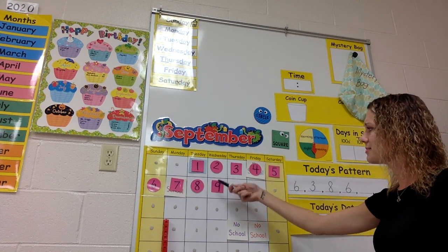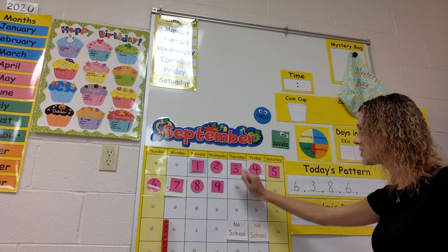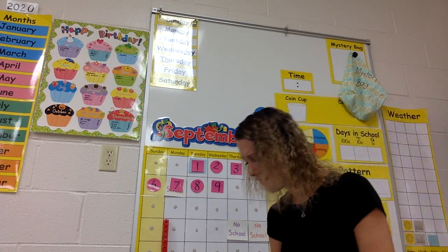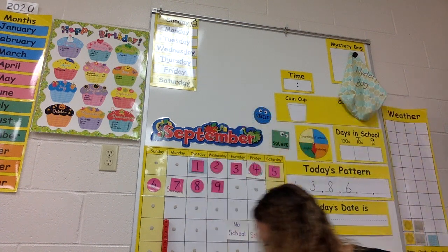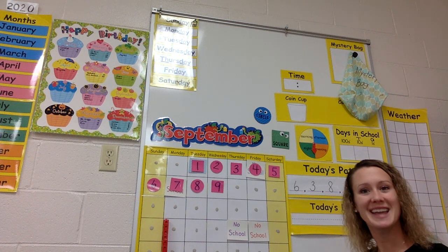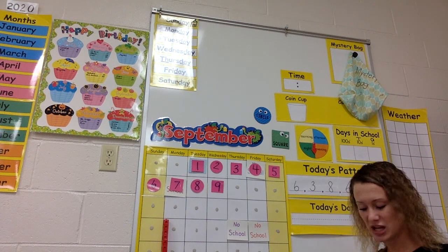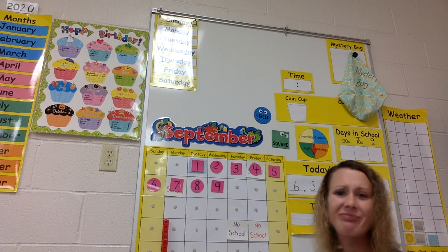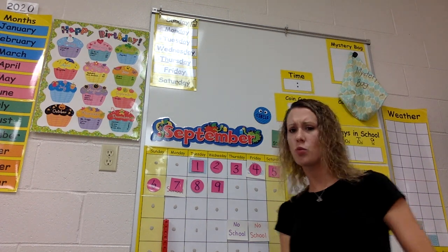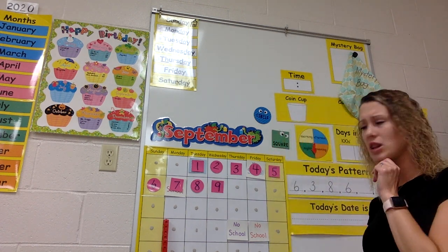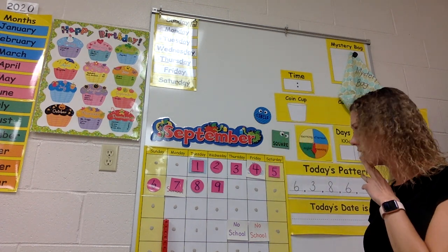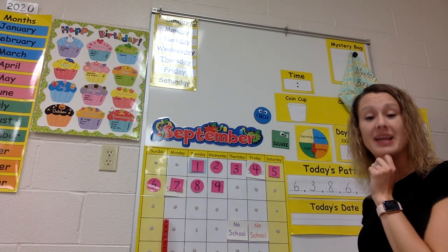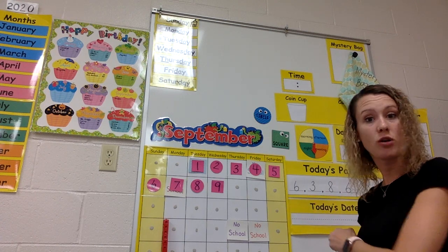If yesterday was September 9th, we know it is Thursday, but we need to put a number here for Thursday. If yesterday was the 9th, what day is it today? What number comes after 9? Yeah, a 10. Do you remember what a 10 looks like? A 10 is a 1 and a 0.